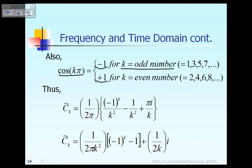If k is an odd number, like 1, 3, 5, 7, then cosine of k pi is equal to minus 1. On the other hand, if k is an even number, like 2, 4, 6, or 8, then cosine of k pi will be equal to plus 1. So because of that, we can express cosine of k pi as minus 1 raised to the power k.